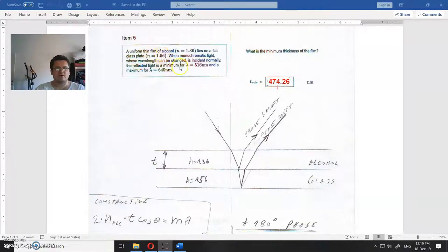A uniform thin film of alcohol with n=1.36 lies on a flat glass plate with n=1.56. Monochromatic light whose wavelength can be changed is incident normally. The reflected light is a minimum for lambda = 560 nanometers and maximum for lambda = 645 nanometers. What is the minimum thickness of the film?